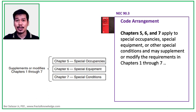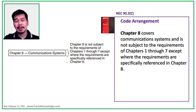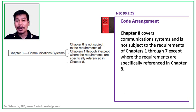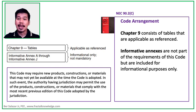special equipment, or other special conditions, and may supplement or modify the requirements in Chapters 1 through 7. Communication systems under the exclusive control of communication utilities are not covered by NEC — that applies only to Section 90.2, Paragraph B, No. 4. Chapter 8 covers communication systems and is not subject to the requirements of Chapters 1 through 7, except where those requirements are specifically referenced in Chapter 8. Chapter 9 consists of tables applicable as reference. Informative annexes are not part of the requirements of the code but are included for informational purposes only.